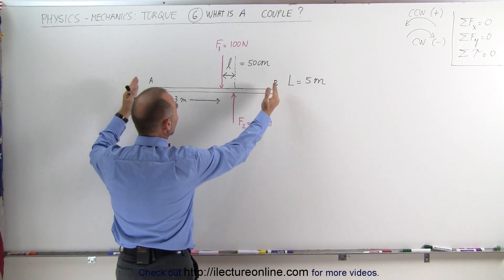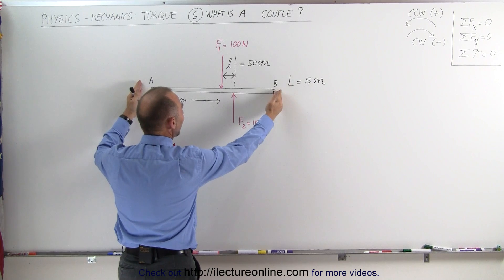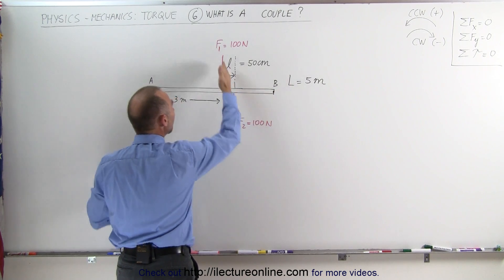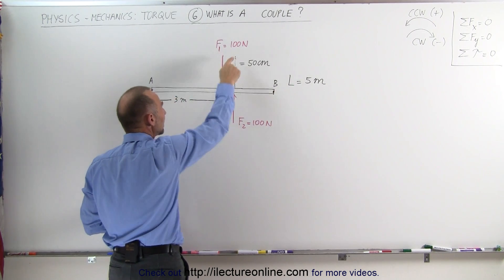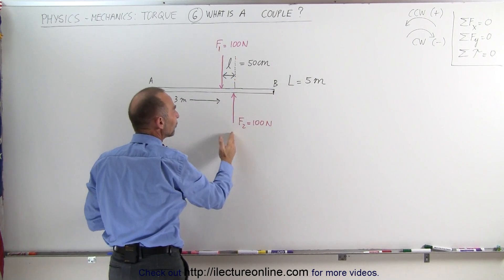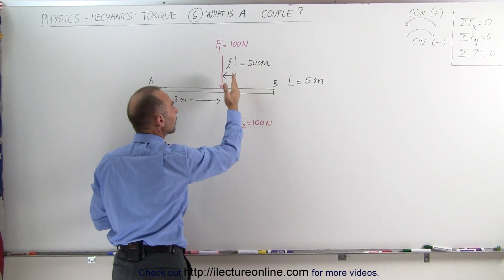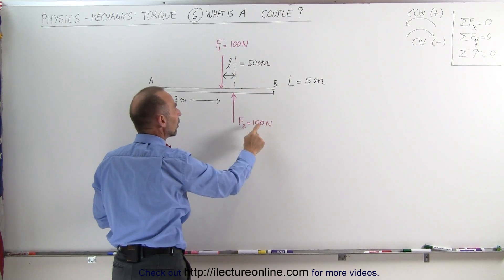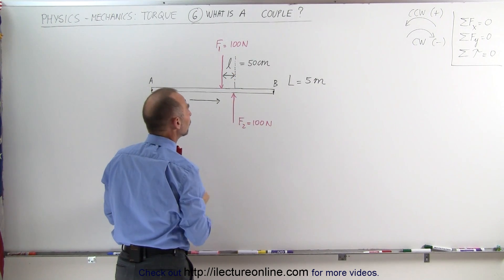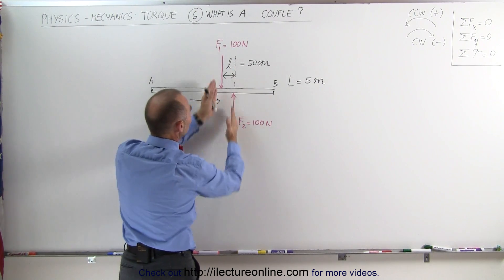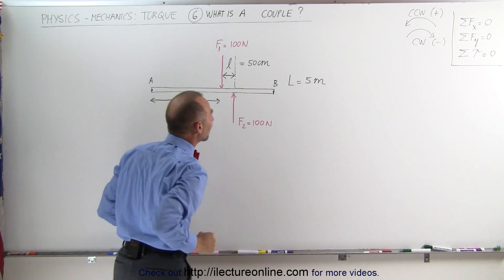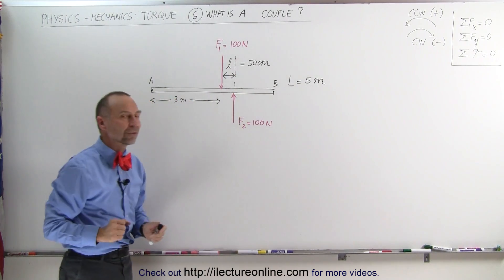You can see that we have a beam here that's 5 meters long. We have F1 acting downward on the beam, a 100 Newton force. F2 acting upward on the beam, another 100 Newton force. And the lines of action of the two are separated by 50 centimeters.